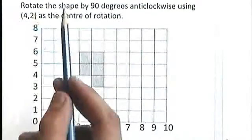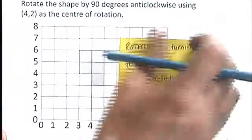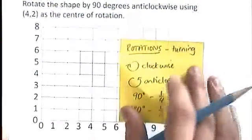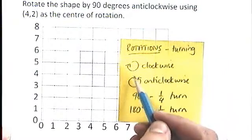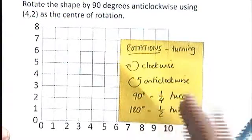Let's read it. It says turn the shape 90 degrees. Let's check what 90 degrees is. 90 degrees is a quarter of a turn. And we're going to go anticlockwise. Anticlockwise means this way, turning it around in that direction.